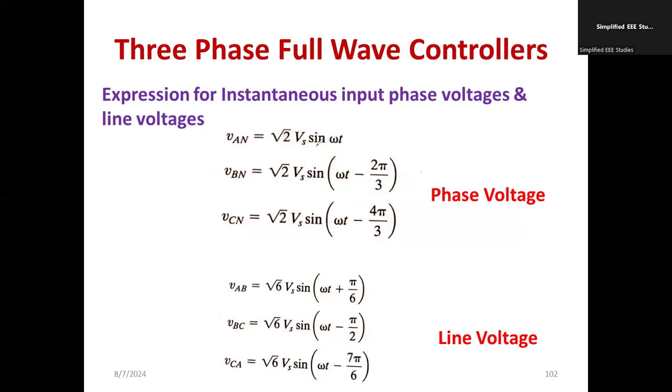Next, we will write the line voltage and phase voltage of three-phase full-wave controller. If I talk about the phase voltage, we will write VAN, VBN, and VCN. These are called the phase voltage, where the line voltage will be VAB, VBC, VCA. These are generally called line voltage.